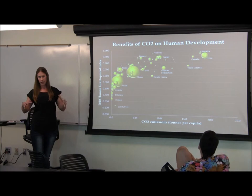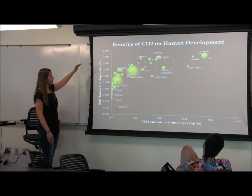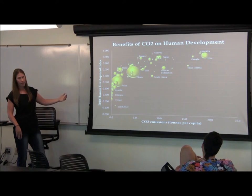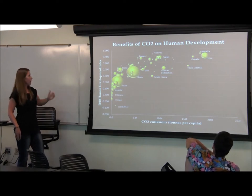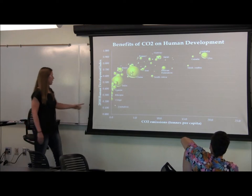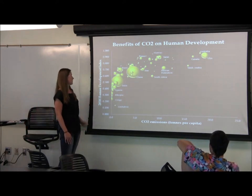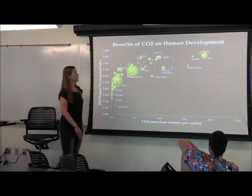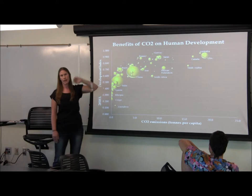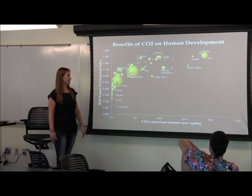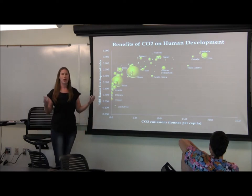The index takes those three parameters, averages them, and normalizes on a scale from zero to one, allowing you to compare and rank countries in terms of human development. In general, as CO2 emissions per capita increase, we also see increases in human development. But we also see a saturation effect or diminishing returns — countries here receive huge increases in human development for small increases in CO2, while countries in this area of the graph can increase their emissions almost as much as they want without really seeing an impact. A lot of this is because extra emissions in the developed world aren't contributing to greater educational experiences or better health — these are mostly what you would call luxury emissions.